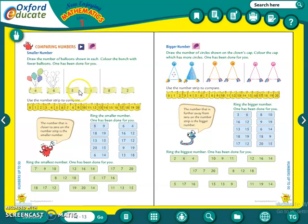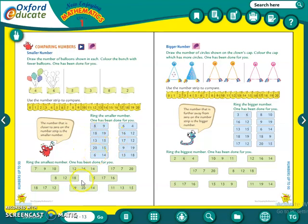We had to draw five balloons here and three balloons here. Which is less — five or three? Three is less, so we had to color those balloons. Likewise, we had to circle the smaller number — the number that comes first, that is the smaller number. And here, what we did: we had to circle the smallest number — from the three given numbers, whichever is smallest, we had to circle that.